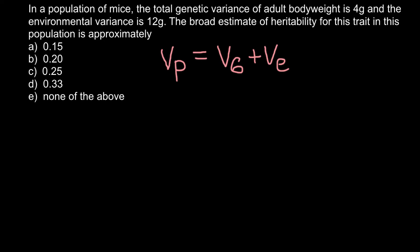And the second formula would be: broad sense heritability, that is H capital squared, equals variance genetic divided by variance total phenotypic.